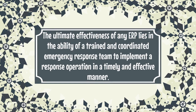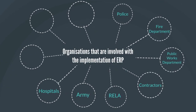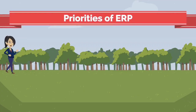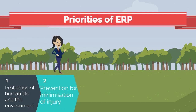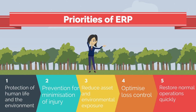There are five priorities of an emergency response plan: number one, protection of human life and the environment; number two, prevention and minimization of injury; number three, reduce asset and environmental exposure; number four, optimize loss control; and lastly, restore normal operations quickly.